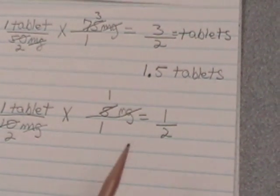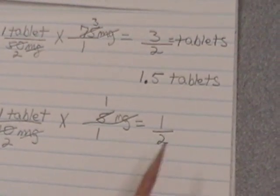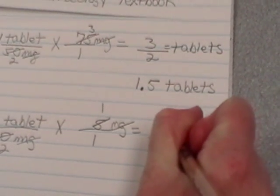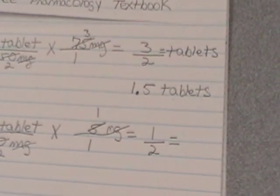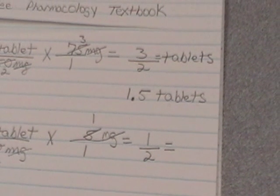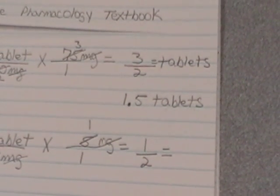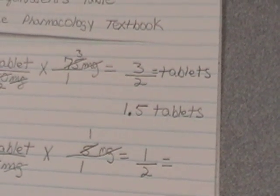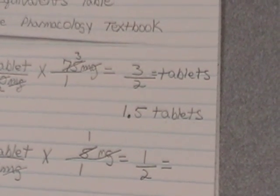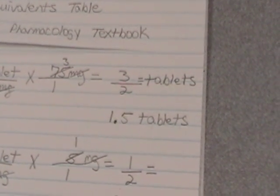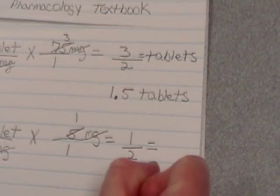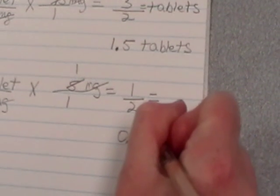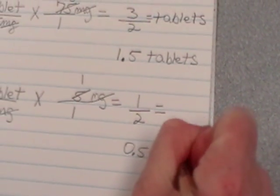We do not want our answer to end in a fraction. We want it to end in a decimal. Please use your calculator to divide this out to avoid making mistakes in the future. So I am going to have 1 divided by 2 which equals 0.5. And that would be 0.5 tablets.